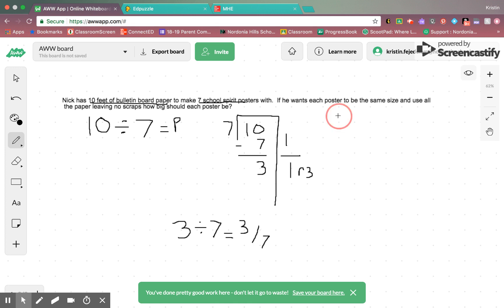So, in this case, we would have one and three sevenths foot of paper per poster, if we wanted to make seven posters.